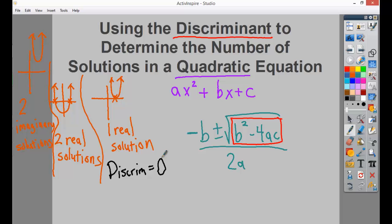If it is positive, then you end up with two real solutions, because it'll work out where you'll have negative b plus or minus a square root that won't give you an imaginary number. So you'll have negative b plus something, negative b minus something, two solutions that are real.